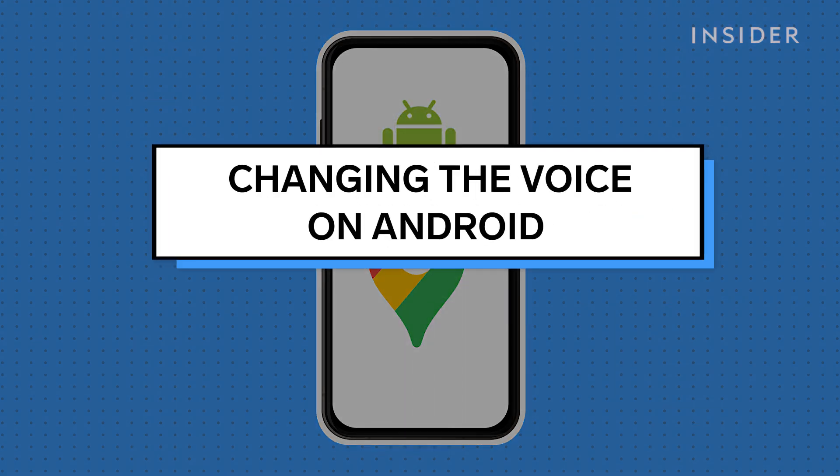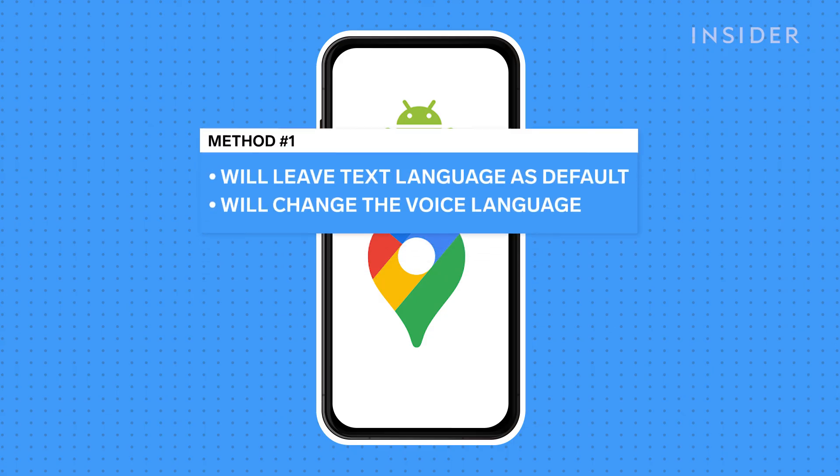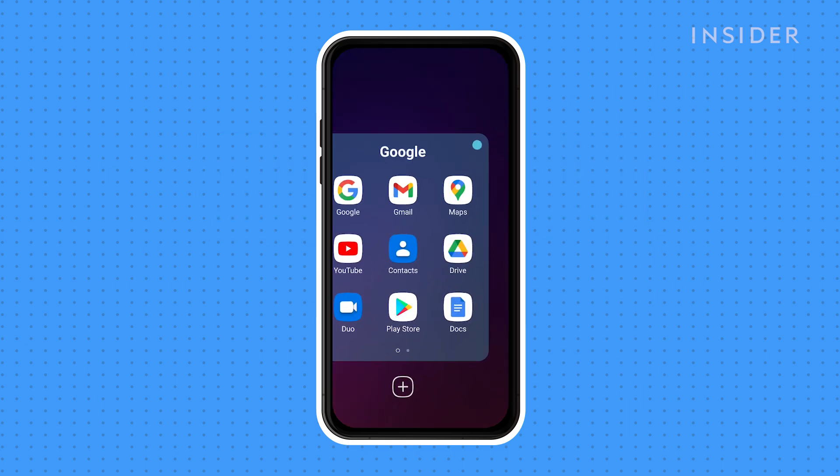Here's how to do it on an Android phone. This first method will leave the interface text language to the default — in our case English — but will change the language of the voice.